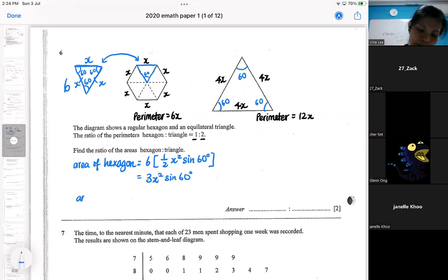So for the area of the triangle, it will be half AB sine C as well. But I do it in 4x, half 4x times 4x. So you simplify the algebra, 16x squared, then you will get 8x squared.